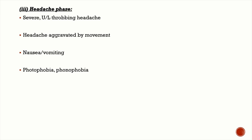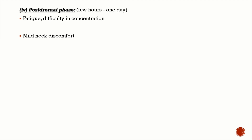During the headache phase, the classical description of migraine headache is unilateral, throbbing in nature, moderate to severe in intensity, and aggravated by movement. The patient prefers to sit in a dark, quiet room. Associated symptoms include nausea, vomiting, photophobia, and phonophobia.